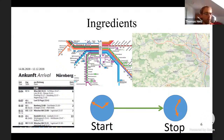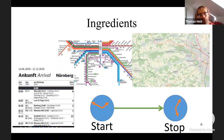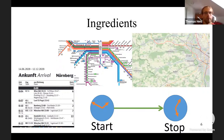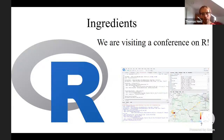For ingredients I need timetable or public transport data from the transport agency, a map to show where I can go, and I must decide when to start and stop the trip. I use R because we are at an R conference.